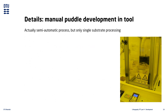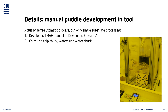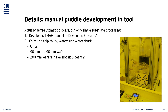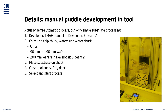Our manual puddle developer tools are actually semi-automatic tools, but they can only process a single substrate at a time. We have two manual developers: one for development using TMAH and one for development of e-beam resists. These tools can process chips and wafers from 50 to 150 mm in diameter, and the e-beam developer can also process 200 mm wafers. You use them by placing your substrate on the chuck, closing the lid and safety door, selecting the process you want to run, and pressing start. When the process completes, the substrate has been cleaned and is ready to be removed.